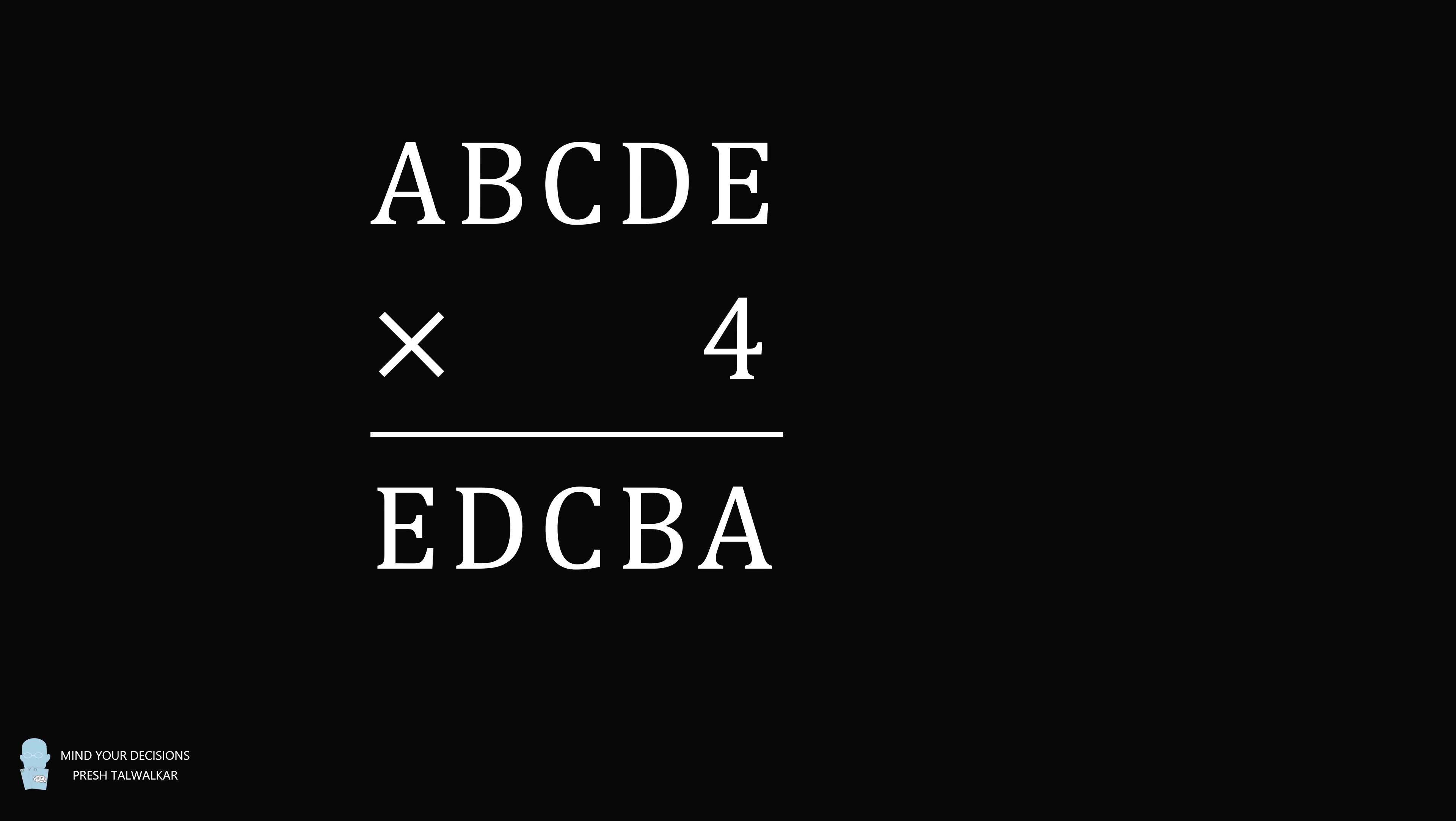Hey, this is Presh Talwalkar. Here's a wonderful logic test. ABCDE multiplied by 4 is equal to EDCBA. In other words, multiplying by 4 reverses the order of the digits. Each letter is a different digit from 0 to 9. I want to thank everyone who suggested the problem to me. Pause the video if you'd like to give this problem a try, and when you're ready, keep watching to learn how to solve this problem.